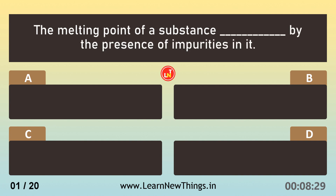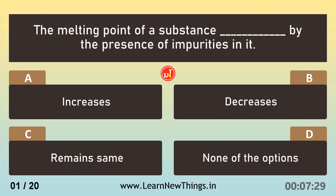The melting point of ice, dashed by the presence of impurities in it, decreases.